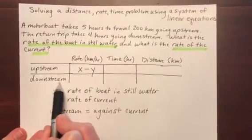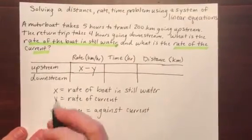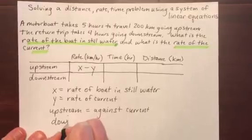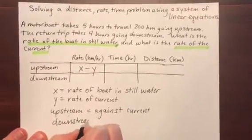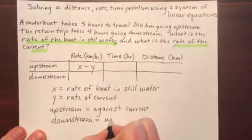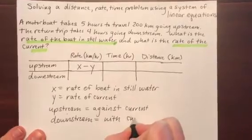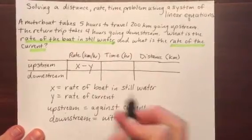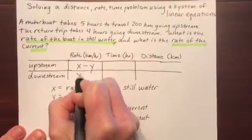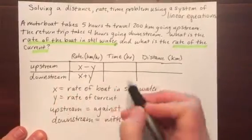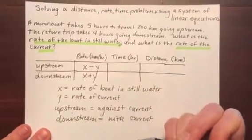Whereas if your boat is going downstream, now you're going with the current. So downstream means the current is behind you and it's pushing you, making you go faster. And so that rate would be x plus y. The current adds to your boat's rate.